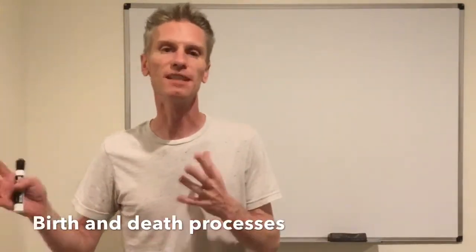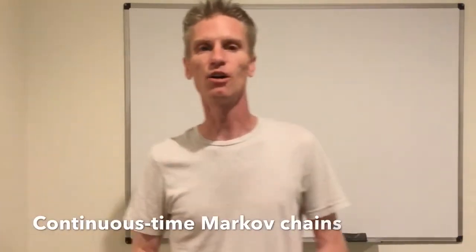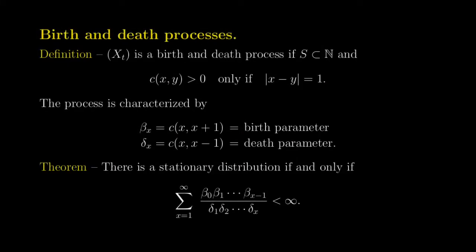They form a specific class of continuous-time Markov chain, characterized by the fact that the state space is typically ℕ, the set of all non-negative integers, sometimes a subset of ℕ. They are characterized by the fact that you can only go from state x to state y — meaning the rate at which you jump from x to y is strictly positive — only if the absolute value of x minus y equals 1. So from any integer you can go to the next integer or the previous integer.